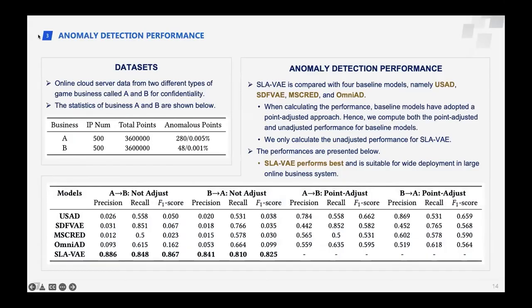Next, we present the evaluation results. To evaluate the effectiveness of our proposed model, we conduct experiments with online cloud server data from two different types of game business. The statistics of business A and B are shown in the left figure. We compare SIEVAE with four baseline models. When calculating performance, baseline models adopted a point-adjusted approach; hence, we compute both point-adjusted and unadjusted performance for baseline models. The results show that SIEVAE performs best and is suitable for wide deployment in large online business systems.